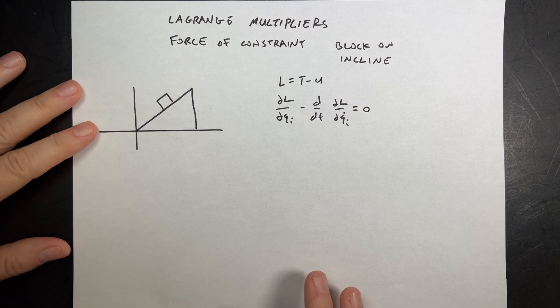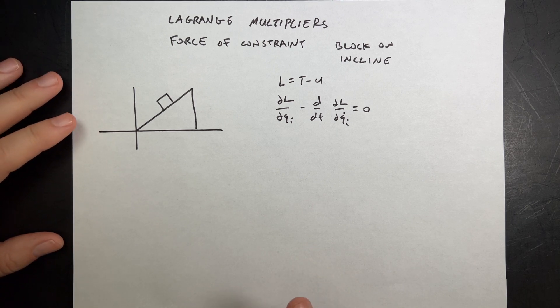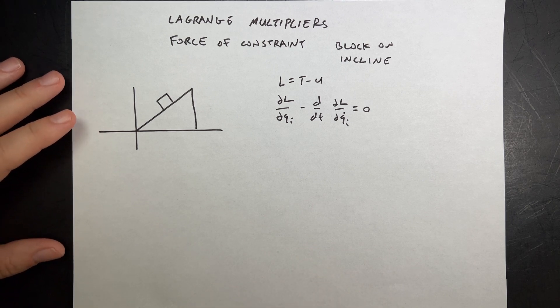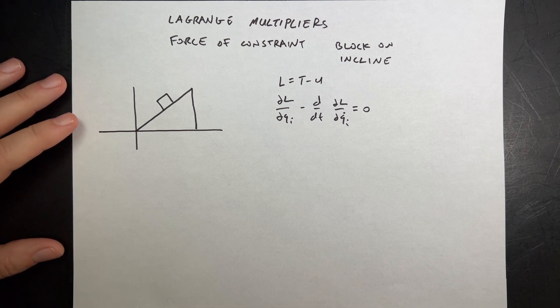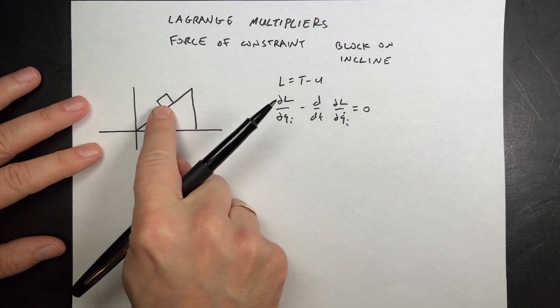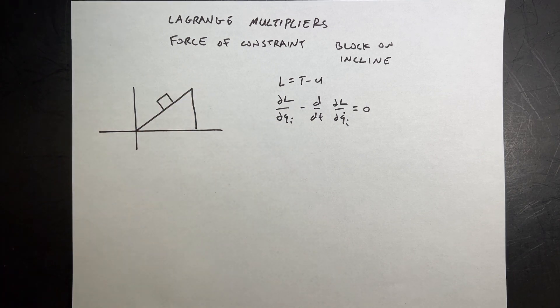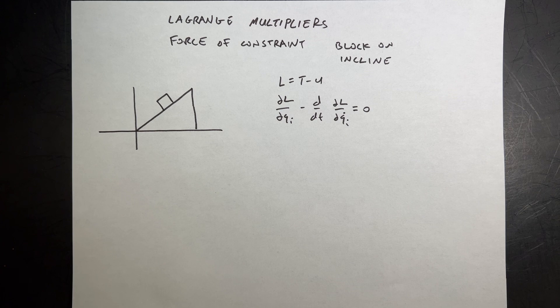Today we are going to continue Lagrangian mechanics, but in this case we're going to do something a little bit different. We want to find the force of constraint on a block sliding down an incline — no friction.